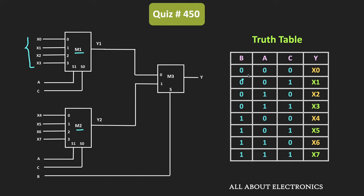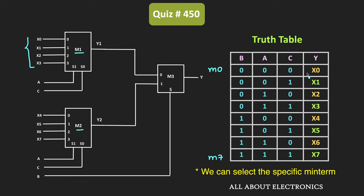As you can see from the truth table, every input represents a specific minterm. For example, when the selection inputs are 0, 0, 0, then x0 will get selected — this represents the M0 minterm. Likewise, we have different minterms from M0 to M7. Depending on the values of x0 to x7, we can select a specific input, and in this way we can implement any Boolean function of three variables.